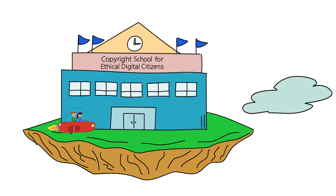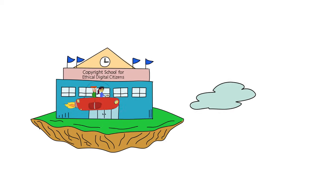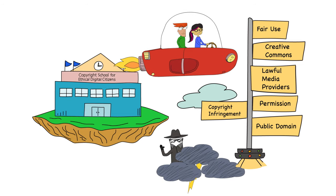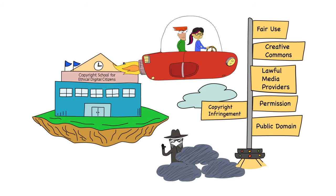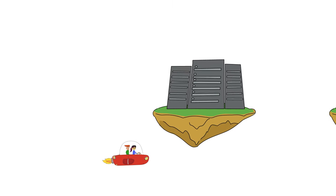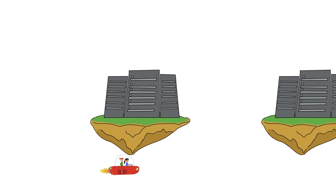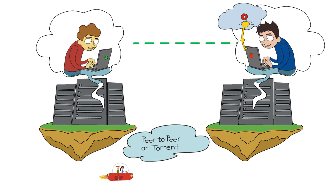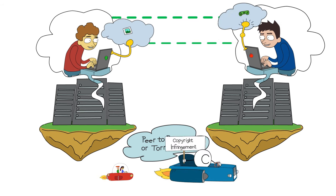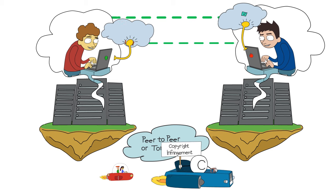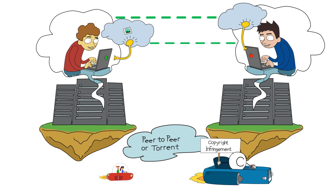Part of being a responsible digital citizen is steering clear of copyright infringement. To do that, we need to understand what it is. I'll give you some examples. Passing around or sharing copyrighted media on peer-to-peer or torrent sites, especially sites that encourage uploading and downloading without permission — that's copyright infringement.